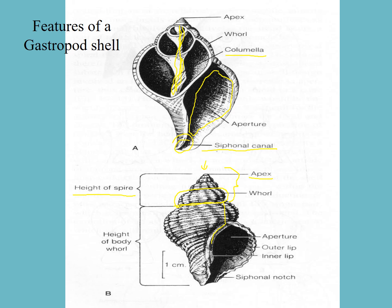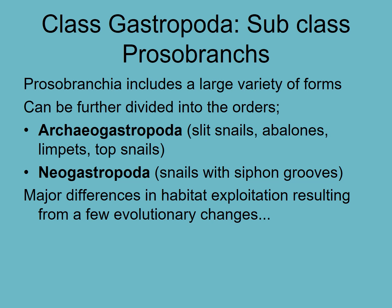The inner lip is the inner part of the shell or the aperture. The outer lip is the outer part of the aperture. So we're going to talk about two different subclasses of the prosobranchs, which are snails essentially.